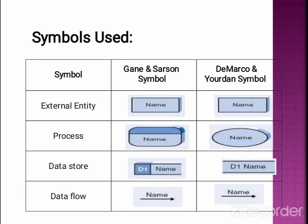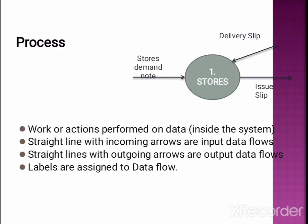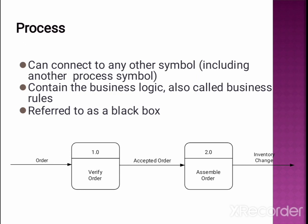Symbols used in DFD include the Gane and Sarson symbol and the DeMarco and Yourdon symbol. External entities supply or receive data; there are two types — Source, which supplies data to the system, and Sink, which receives data from the system. A Process works inside the system; incoming arrows are input data flows and outgoing arrows are output data flows. It contains business logic, also called business rules, and is referred to as a black box.